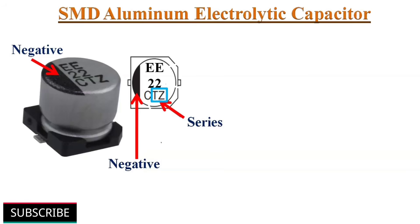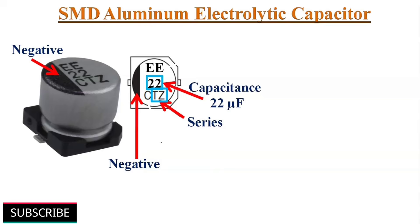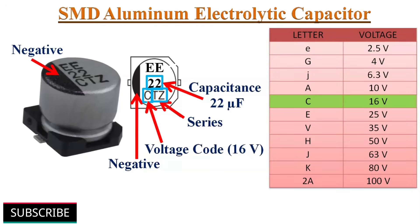SMD aluminum electrolytic capacitors are polarized, and the negative contact is marked on the case. The series type is indicated with two alphabet letters. The two-digit numerical number indicates capacitance in microfarads — here it is 22uF. The voltage rating is indicated with an alphabetic letter; here C means 16V. Hence the capacitance value is 22uF 16V. An additional lot number is also printed on the case.